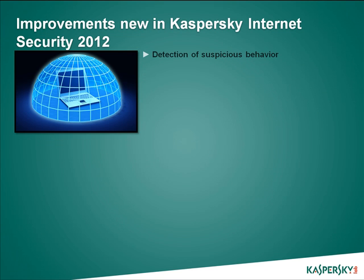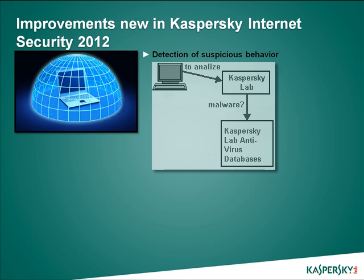Detection of suspicious behavior. Previous versions of Kaspersky Internet Security implemented technologies to analyze the behavior of programs, including a comparison of their actions with the behavioral patterns of known malware. In Kaspersky Internet Security 2012, this technology has been improved. Now information about the behavior of programs running on users' computers is sent to Kaspersky Lab, where the data is analyzed and matched against the reputation of these programs.